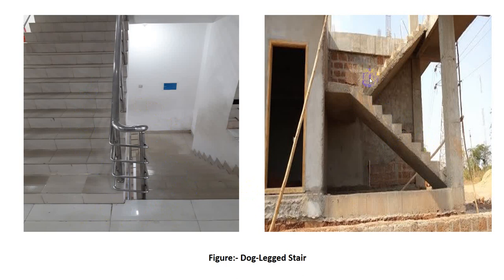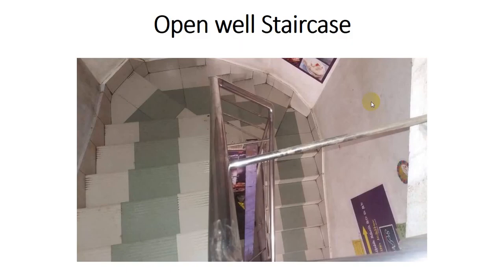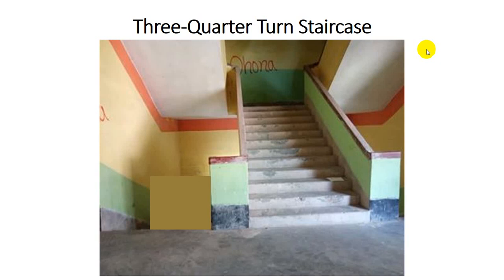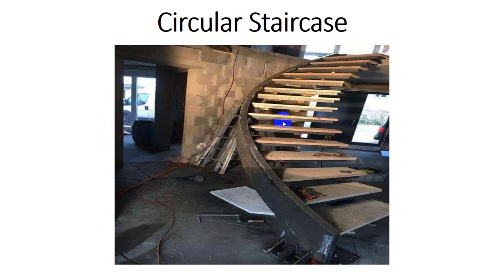Next is the open well staircase. If the stair is surrounded by a wall connected with the whole wall, it is known as an open well staircase. After that, the three-quarter turn staircase — here there is one opening, then another turn, and another turn. The first approach is one direction, then it is divided into two sides. This is known as the three-quarter turn staircase.